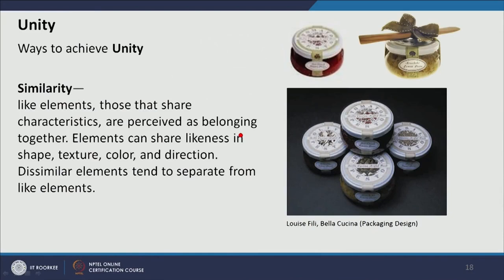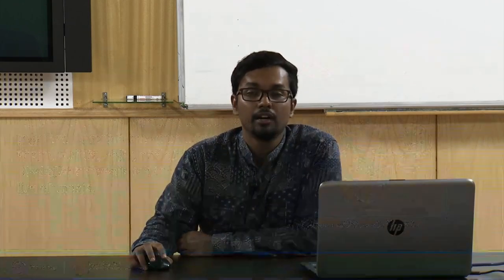The next is similarity. If there are similarities in the elements of design, we perceive the composition as unified. For example, in this packaging design, different packages have different names and colors for different products, but still unity is achieved through the arrangement of design elements. The first product is red and the second is green, but the shape of the packaging, the labeling, the typography, and the texture are all the same. So they create unity among the product range and communicate a brand identity.